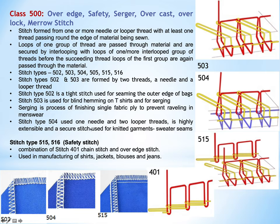Stitch type 504 uses one needle and two looper threads. It is highly extensible and a secure stitch, used for knitted garments and sweater seams. Stitch types 515 and 516 are other sub-types of class 500, referred to as safety stitches, as shown in the diagram here.